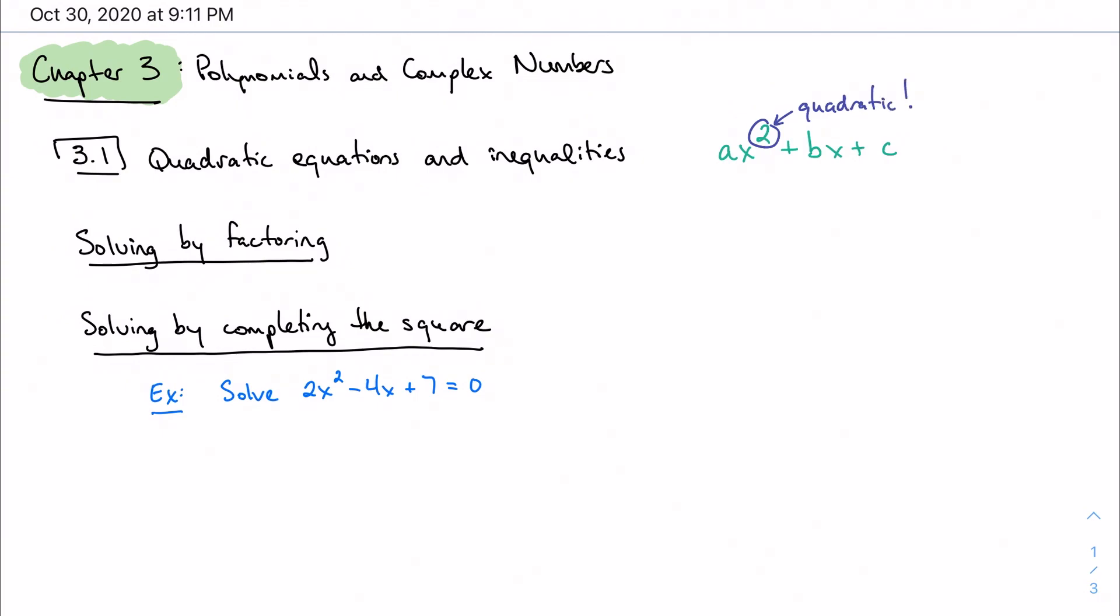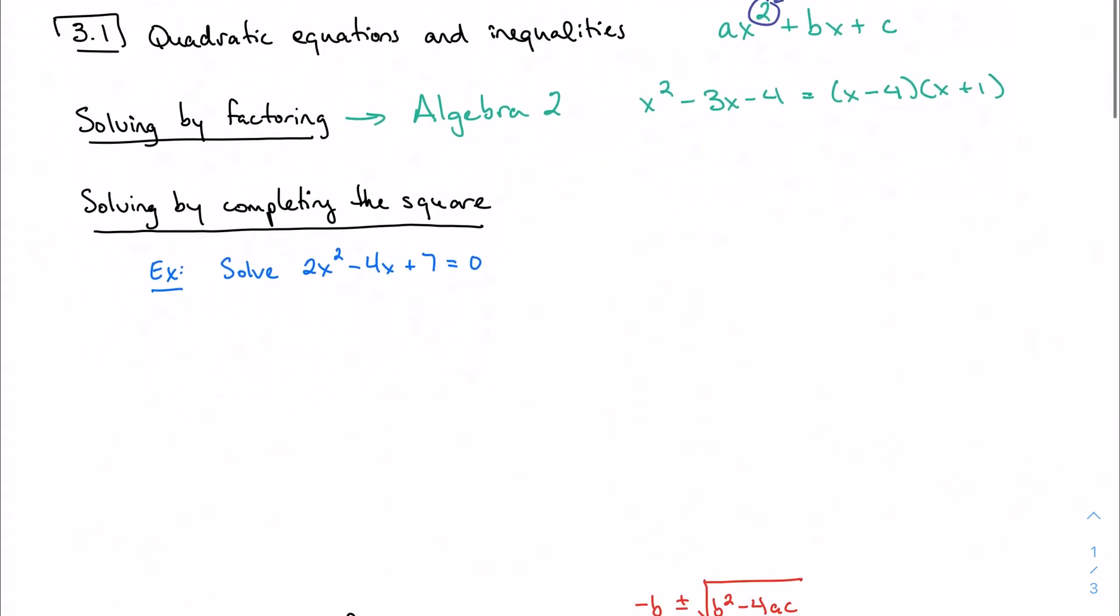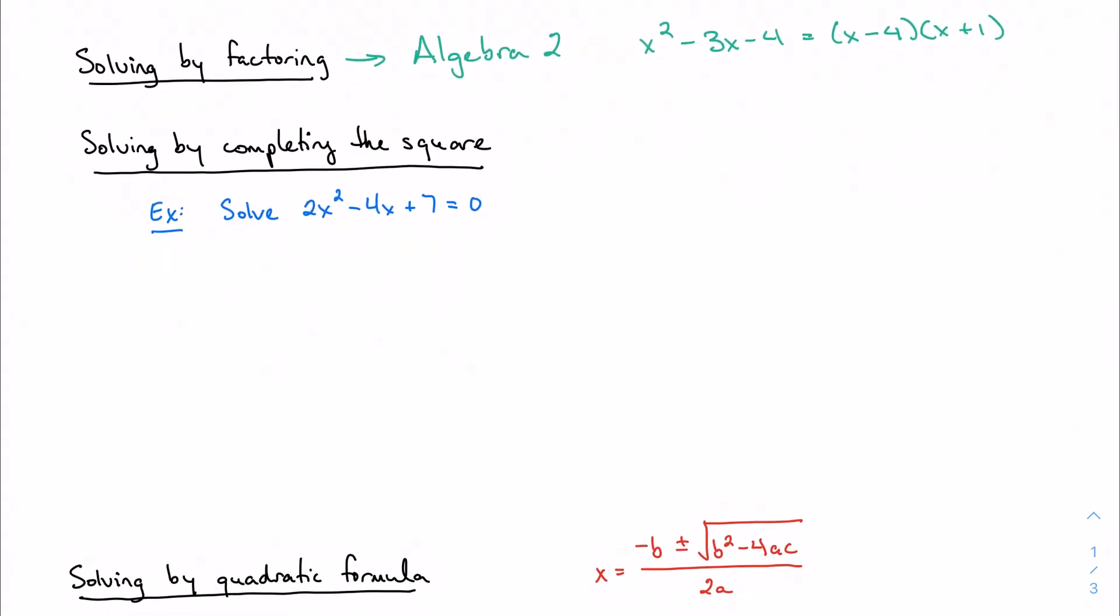And the first trick I have up my sleeve to solve these equations is to factor. Well, this was a major Algebra 2 skill. If anything, this is the major skill in Algebra 2, our process by which I can turn a quadratic trinomial into two binomials, the product of those two binomials. Let's go on to something that maybe needs a little more attention, and that's completing the square.